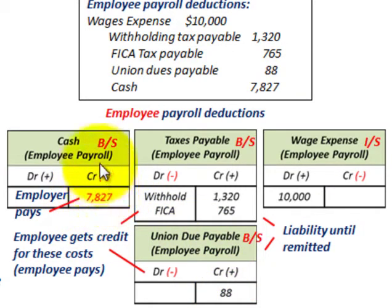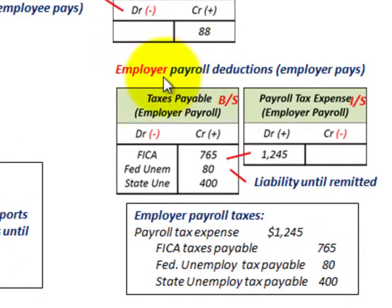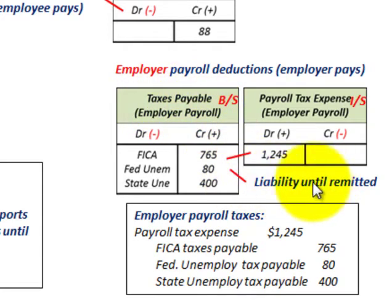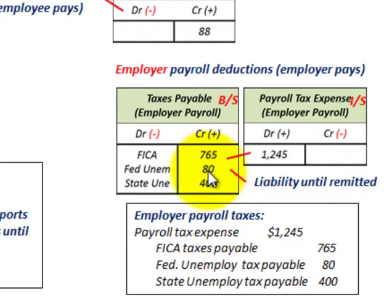Now for the employer's payroll taxes: we debit payroll tax expense on the income statement for $1,245. We then set up taxes payable as a liability on the balance sheet until remitted to the government. This includes the employer's FICA share of $765, federal unemployment of $80, and state unemployment of $400. The credits to taxes payable balance with the debit to payroll tax expense.